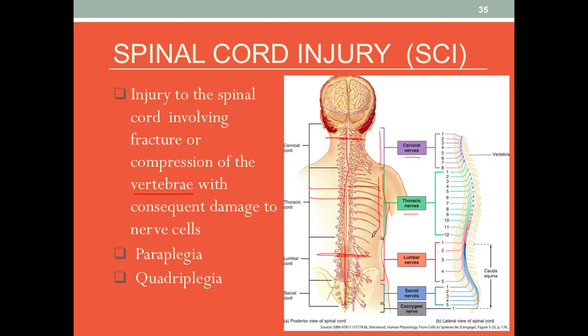One example to think about is the actor who played the original Superman, Christopher Reeve. His injury was in the neck region, sustained during a horse riding accident, and afterwards he had no use of his limbs. Shortly before he passed away, it was reported that he finally had some tiny movement in one finger — more than 10 years after the injury. Unfortunately, he passed away due to cardiac arrest that his doctors believed was caused by an adverse reaction to antibiotics.